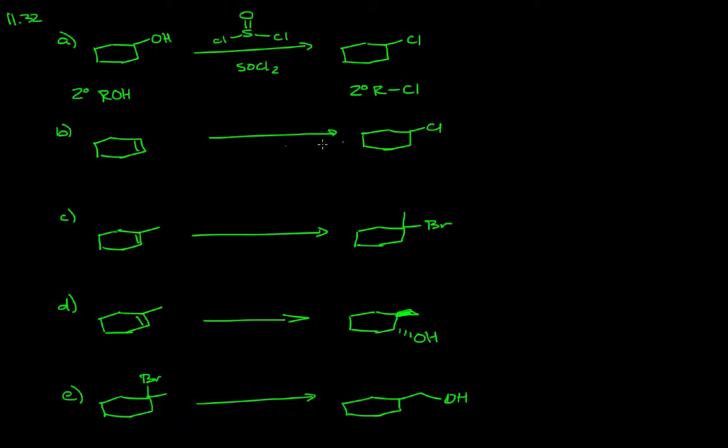Part B is asking us to take an alkene into a secondary chloride. We've seen that secondary chloride already in problem A. Now we're starting with a disubstituted alkene.